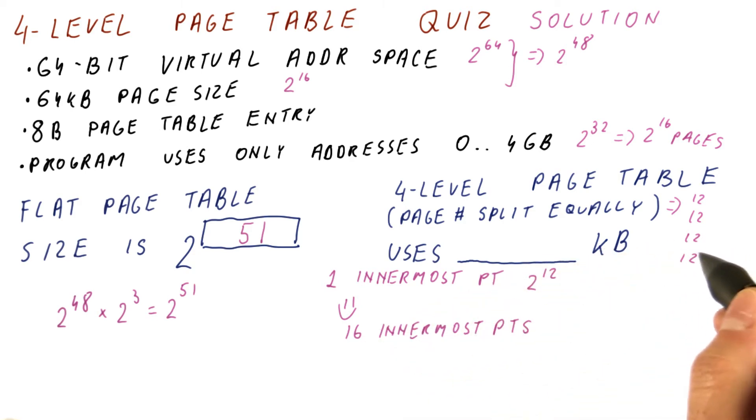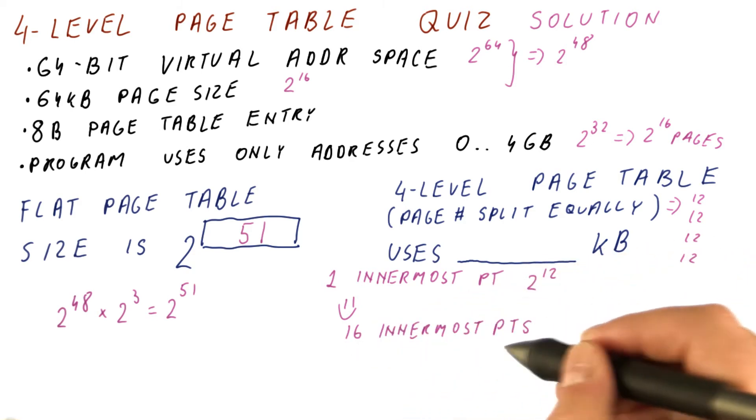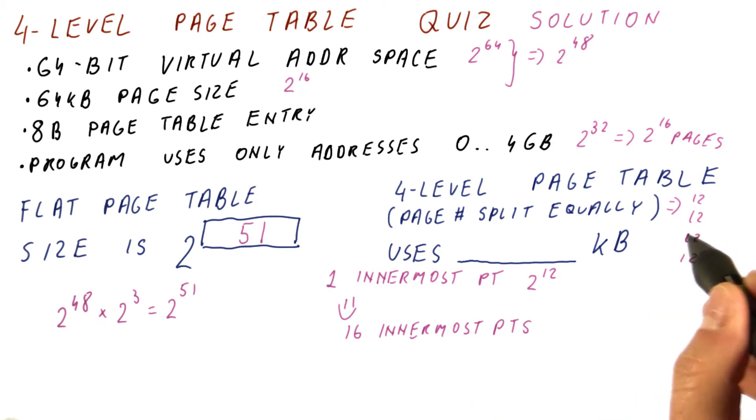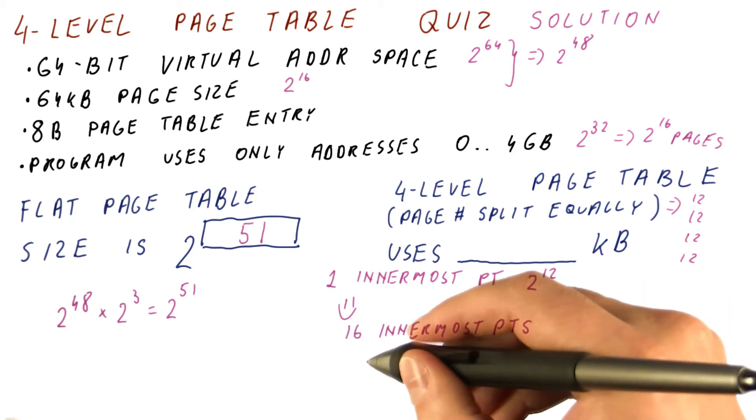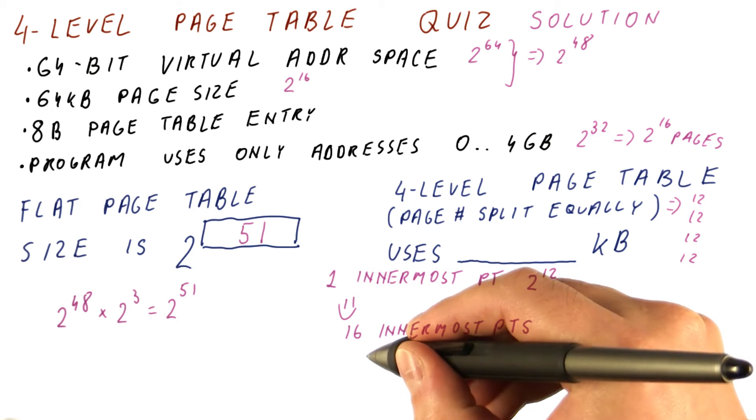How many page tables at the next level we need to point to them? Well, each table at that entry can also have 2 to the 12th entries, and this is only 2 to the 4th. So we need only one. So this is the page table situation we have.